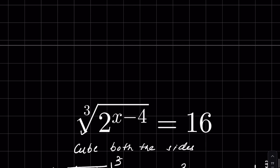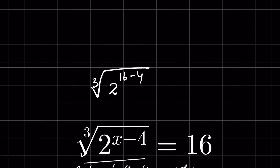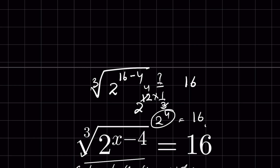We can verify this answer. Under cube root we have 2 raised to the power x minus 4; with x equal to 16, that is 2 raised to the power 16 minus 4, under cube root, and we check whether it equals 16. 16 minus 4 is 12, so this is 2 raised to the power 12 times 1 upon 3, which is 2 raised to the power 4. 2 raised to the power 4 equals 16, so LHS equals RHS and the answer is verified.